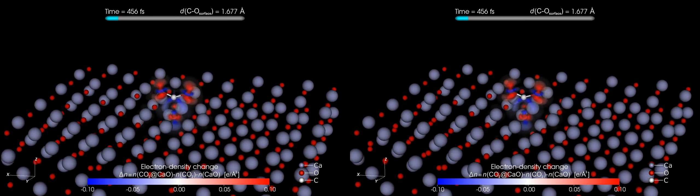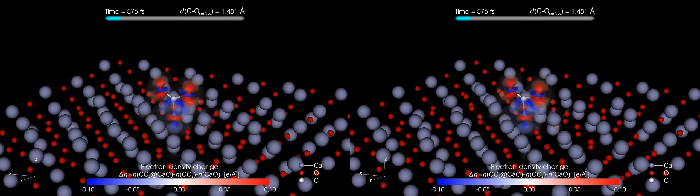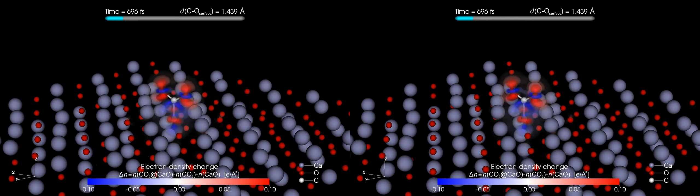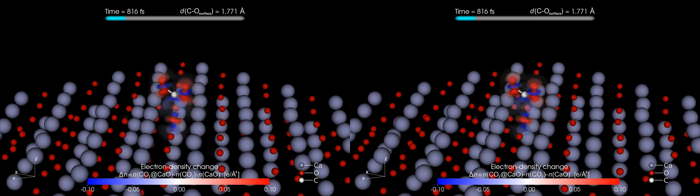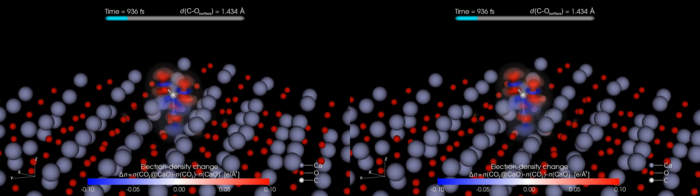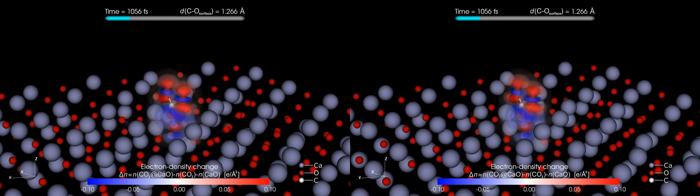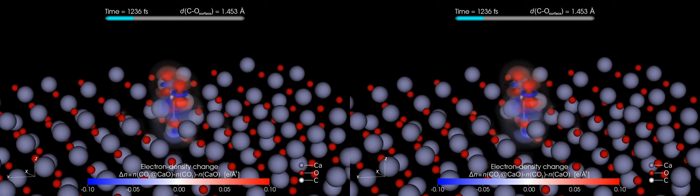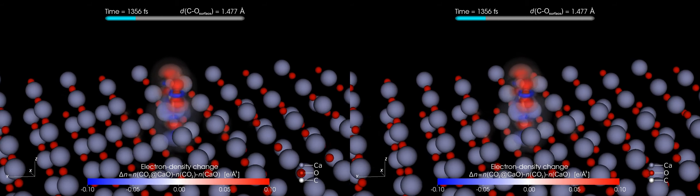When the CO2 molecule gets close to the surface, the electrons redistribute. The movie shows the change of the charge density of the electrons. The red color reflects an increased electronic charge density, while the blue color marks a depletion of electrons.